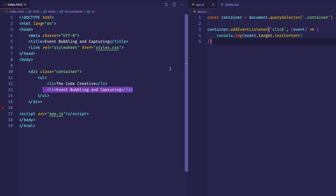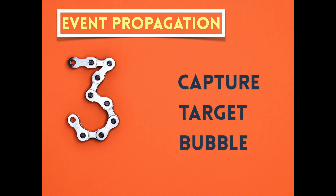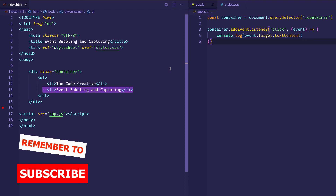In this video we learned all about event propagation and the three phases — capturing, target, and bubbling. We saw how we can control which phase we want to work with to control the order in which events are fired. And we saw how this can be put to real use by way of event delegation. If you enjoyed this video, please give it a like, consider subscribing, and let me know in the comments if there are any topics you'd like to see covered. See you next time.